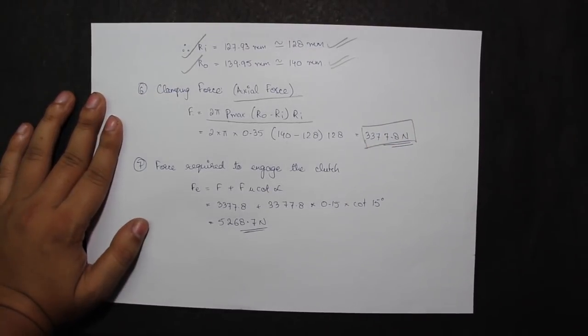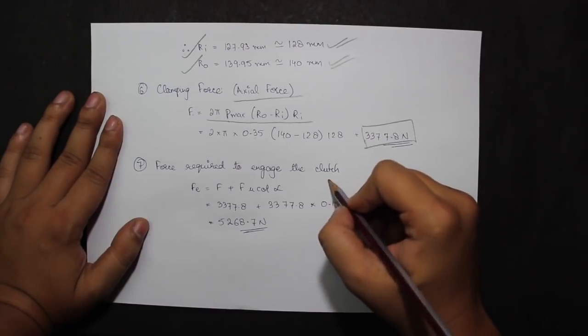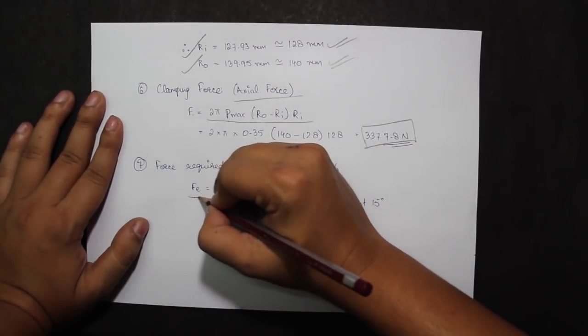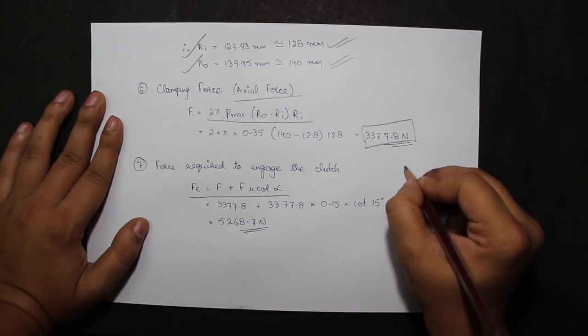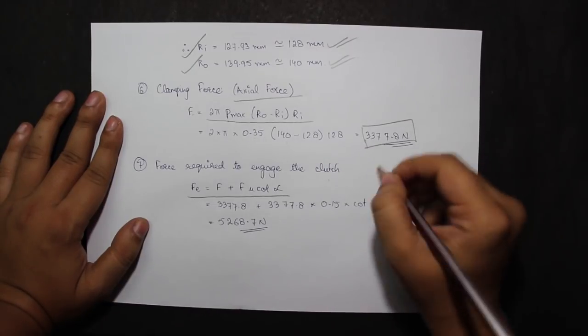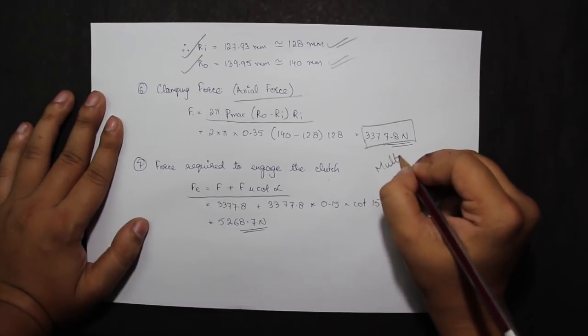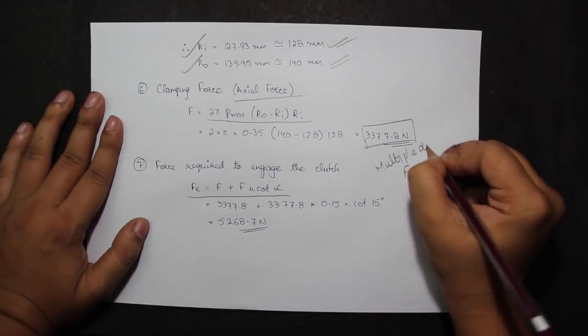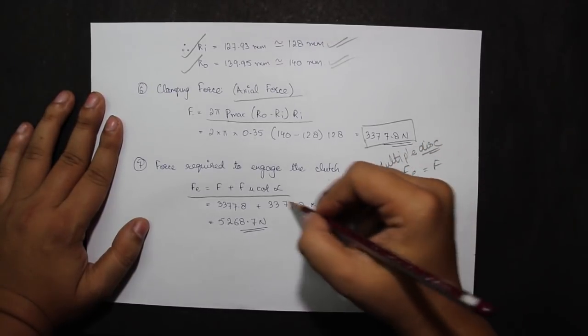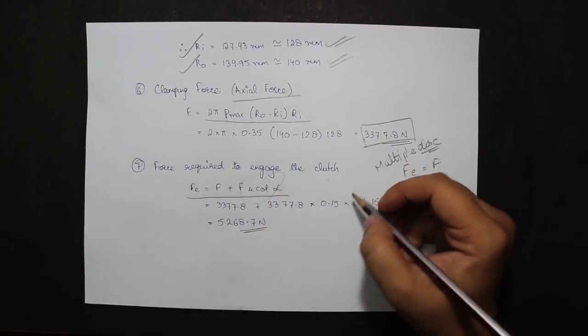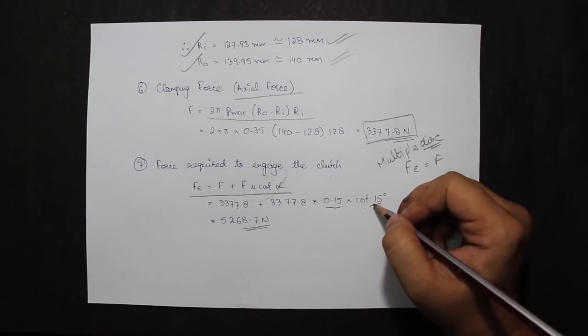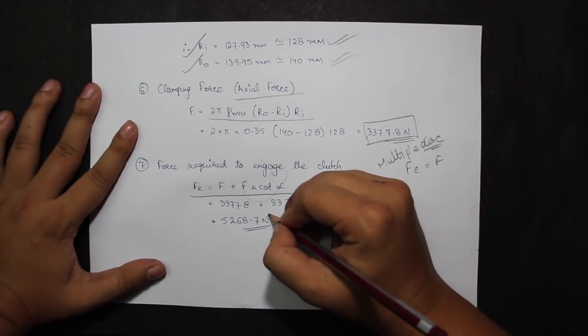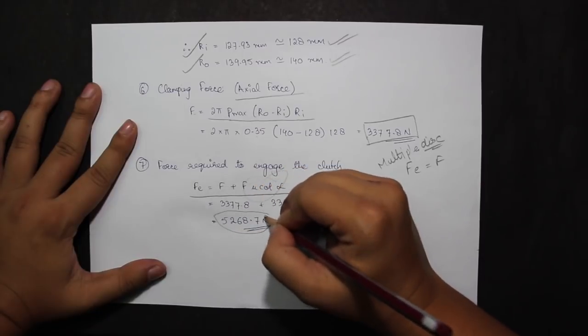Now force required to engage the clutch is one different thing. Fe is not present in the previous question which we did. That was multiple disc wet clutch, but for a conical clutch, Fe is required. So Fe is given by F plus F mu cot alpha. The value of F is taken from here, mu is 0.15, and alpha is 15 degrees. Therefore my force required to engage the clutch becomes 5268.7 N.